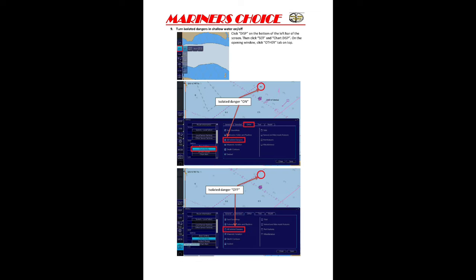Can you turn isolated danger in shallow water on and off? You need to go to the left corner of your ECDIS — click on Display, then go to Setting, then Chart Display. In Chart Display there will be an option for isolated danger. Tick it and save, and on screen you will be able to see the isolated danger and wrecks at that depth. If you unselect and save, they will no longer be visible.